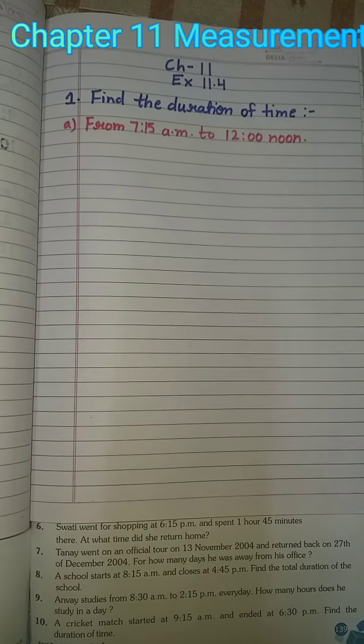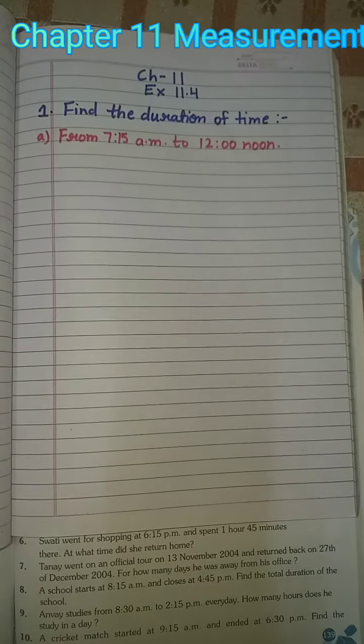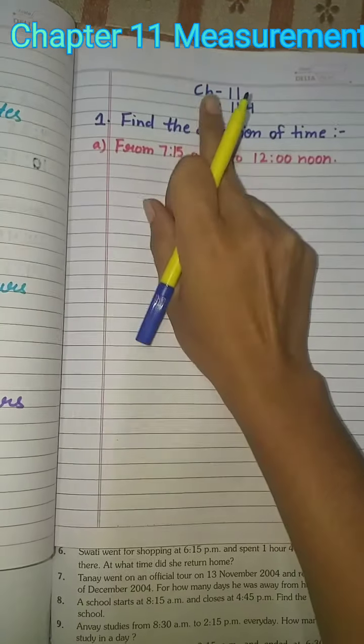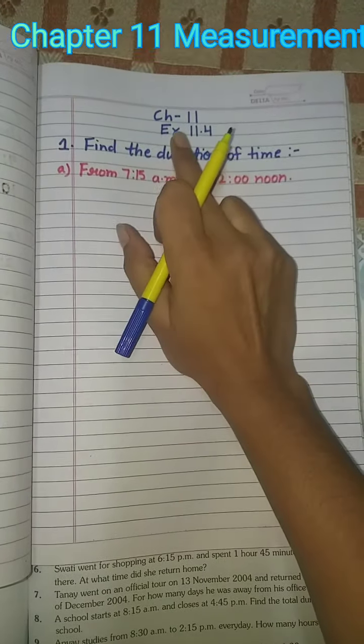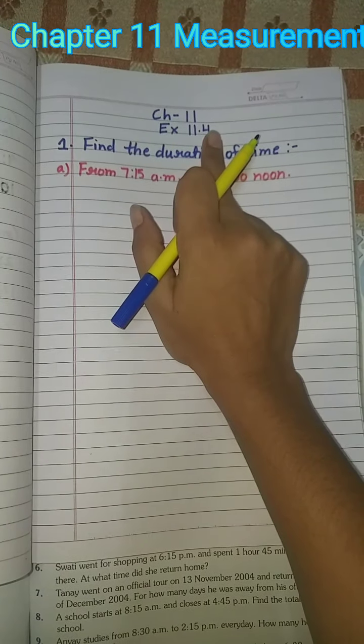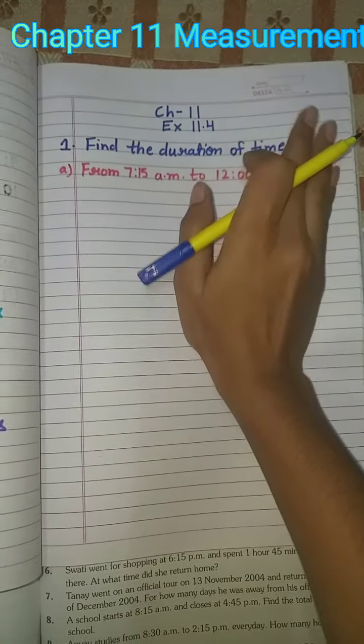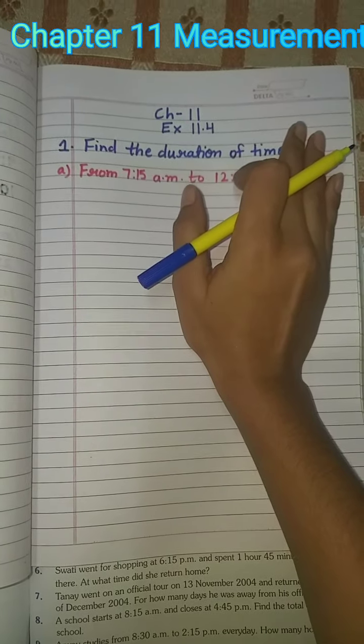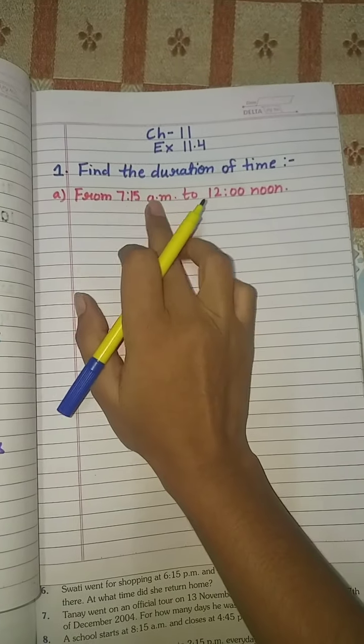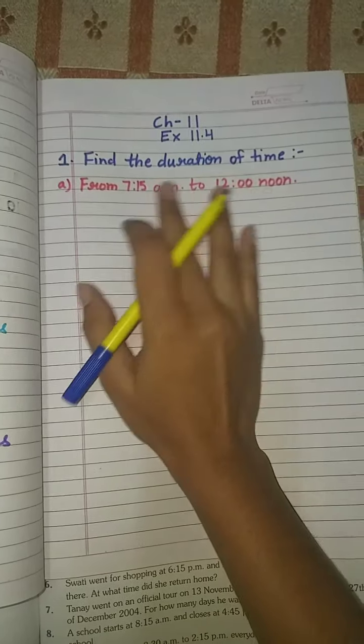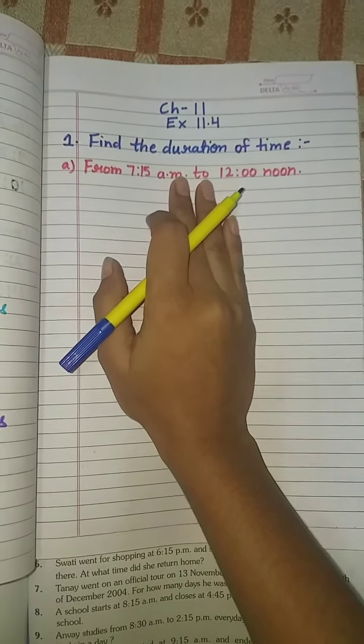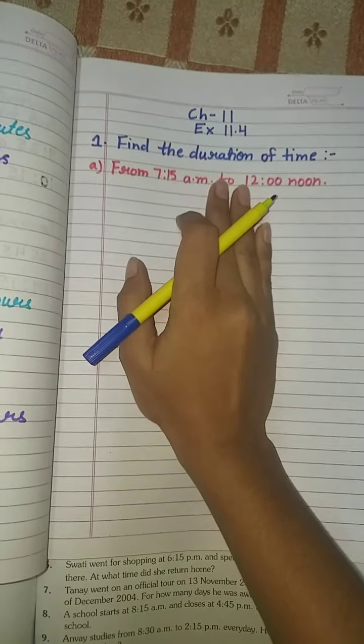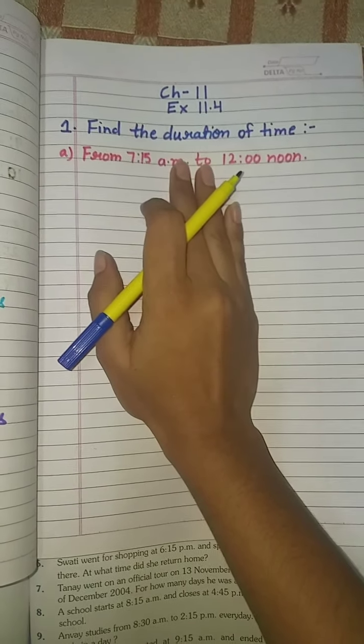Hello students, today we will do Chapter 11, Measurement. Today we will do Exercise 11.4. There will be how to find duration of time. For example, from 7:15 a.m. to 12, between these two numbers we have to find duration of time. Let me show you the first question.